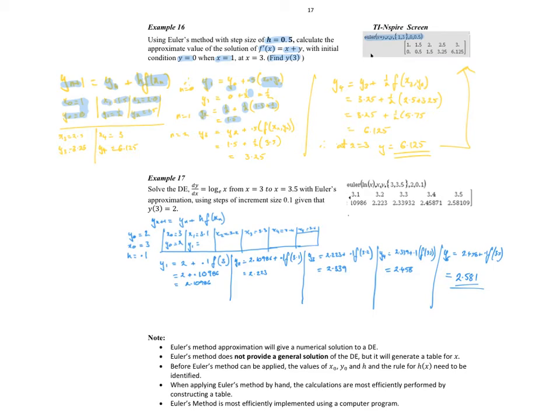If we go to Euler under our catalog, the syntax is: Euler, the function which is the derivative, and then you've got to list your independent and dependent variables, which are x and y. We then want, as a set, the set of x values you're interested in. We want to work from 1, which was our initial x value, up to 3, which is the final one we're interested in. What was the y value at that point? That was 0. And then what's your step size, which is 0.5.